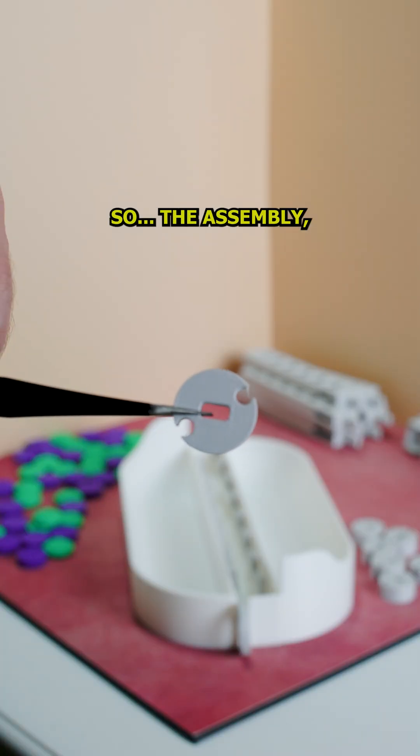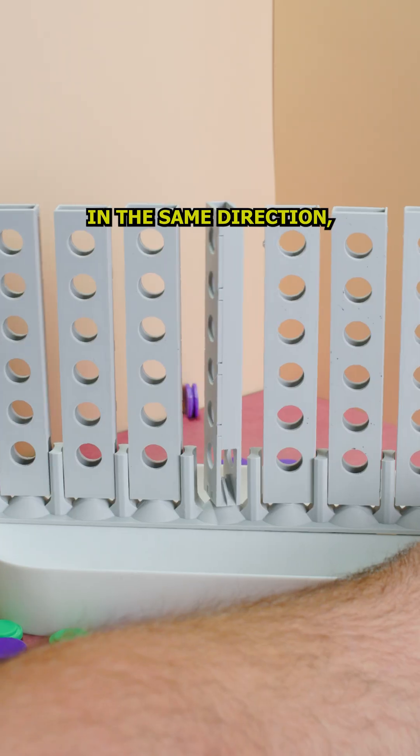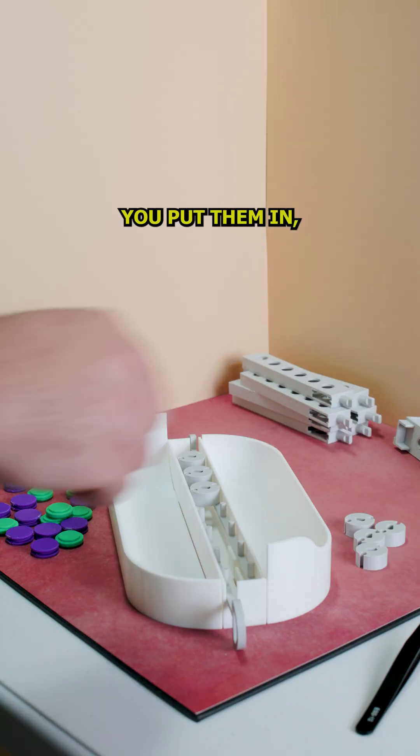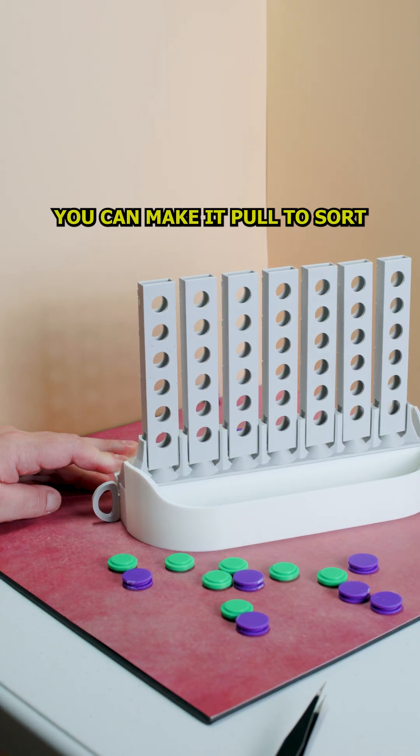So, the assembly. The first mistake you can make is putting those rotators in wrong. The slots should all go in the same direction, otherwise the sliders will not line up at all. Depending on the position you put them in, you can also change how the lever works. You can make it pull to sort, or push to sort.